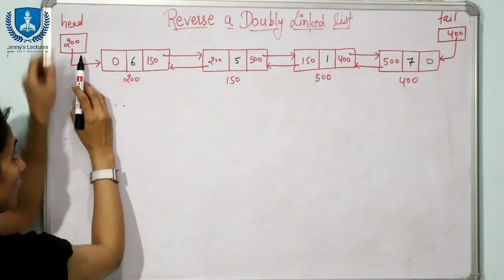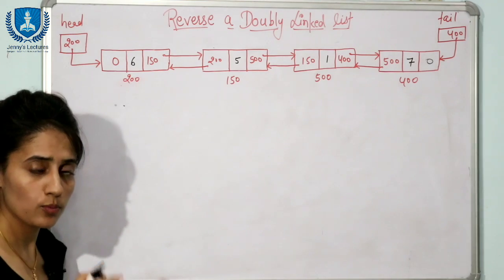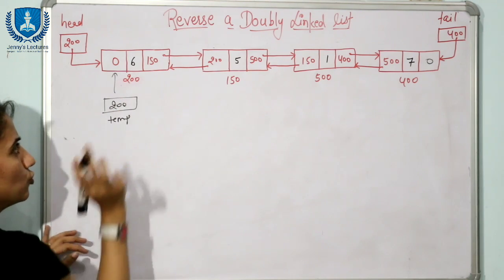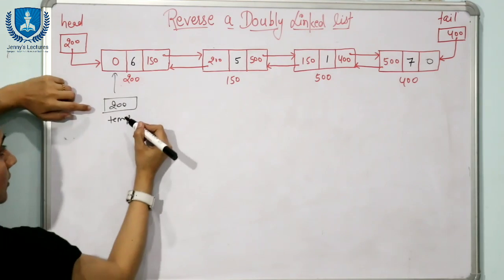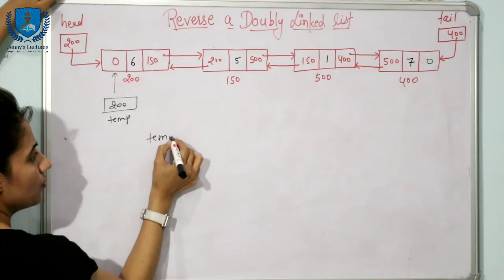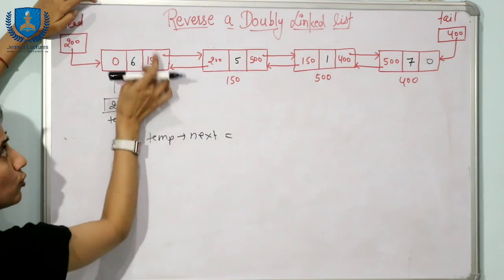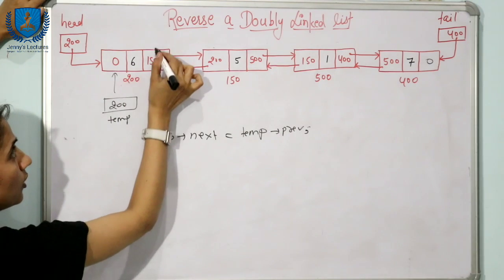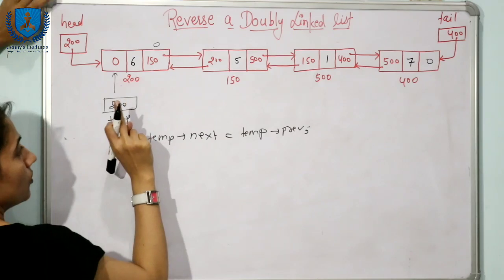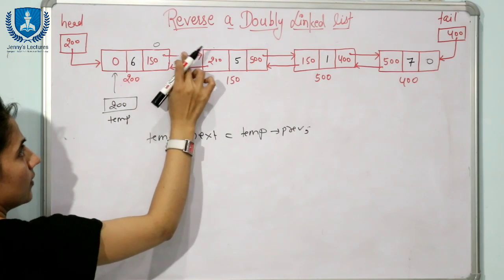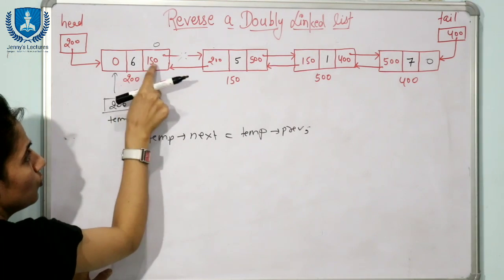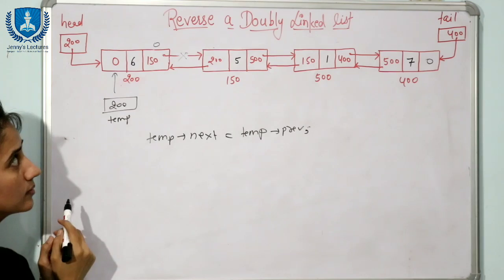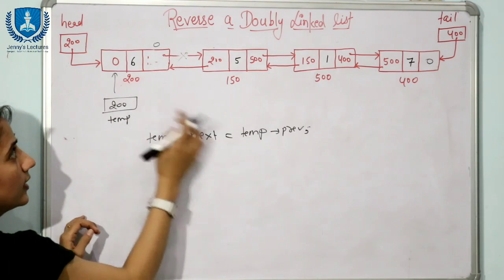We are not going to move the head pointer. We'll take another pointer — a temp pointer — pointing to the current node at address 200. To swap these values, we might write: temp->next = temp->prev, storing 0 here. But now this link is broken — there's no link anymore. When we need to store 150, we realize we can no longer get it because we already broke that link. So there is a problem.